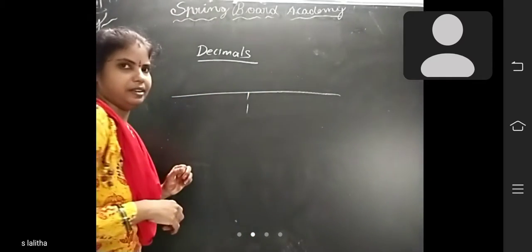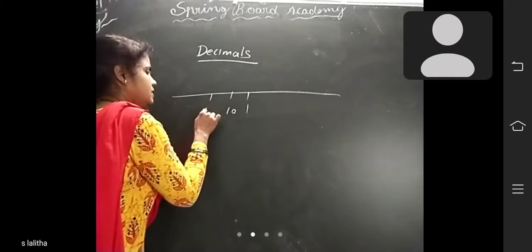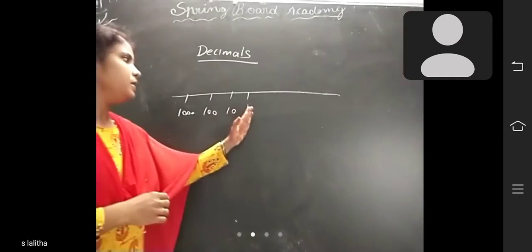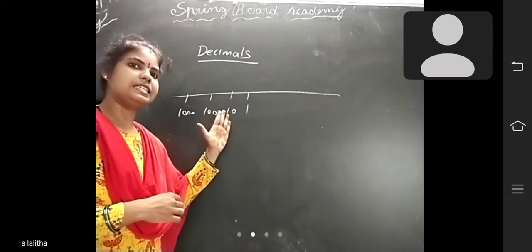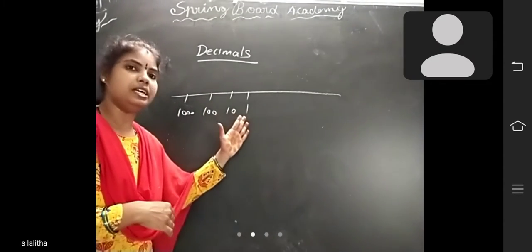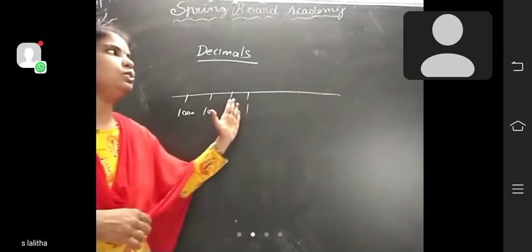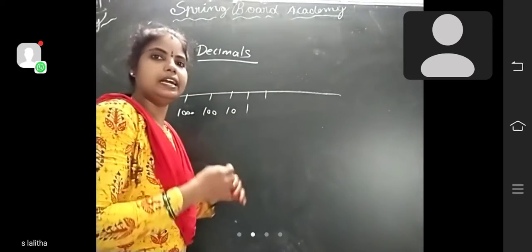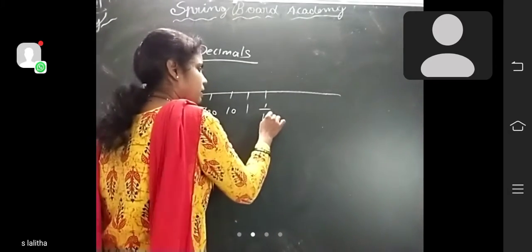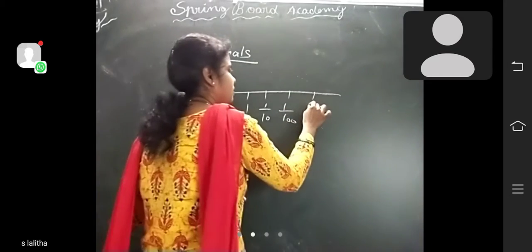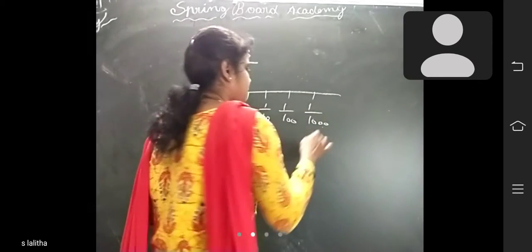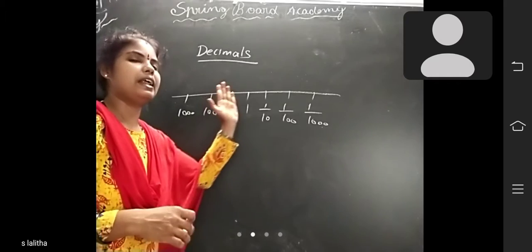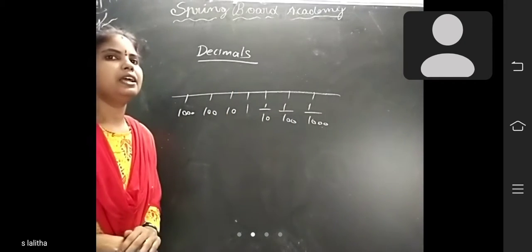In the place value chart, the place value of a digit decreases to 1/10 as the digit moves one place from left to right. So the place value chart in decimal fractions: we have the units place, then the 10th place, 100th place, 1000th place. Moving to the left, value increases 10 times; moving to the right, value decreases 10 times.